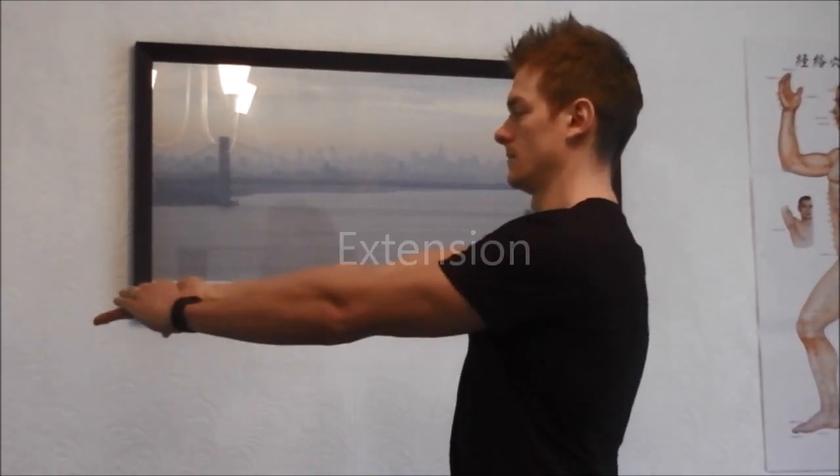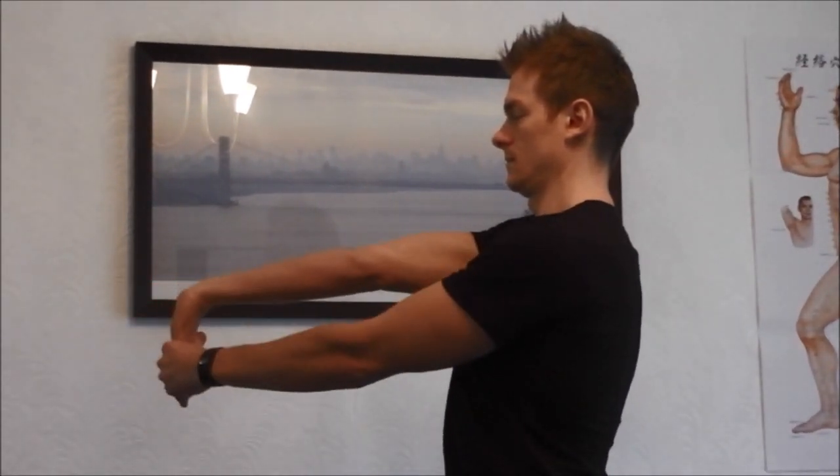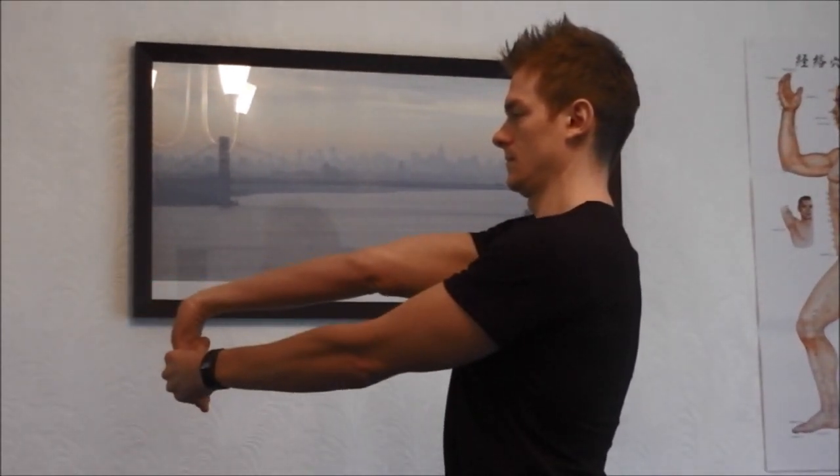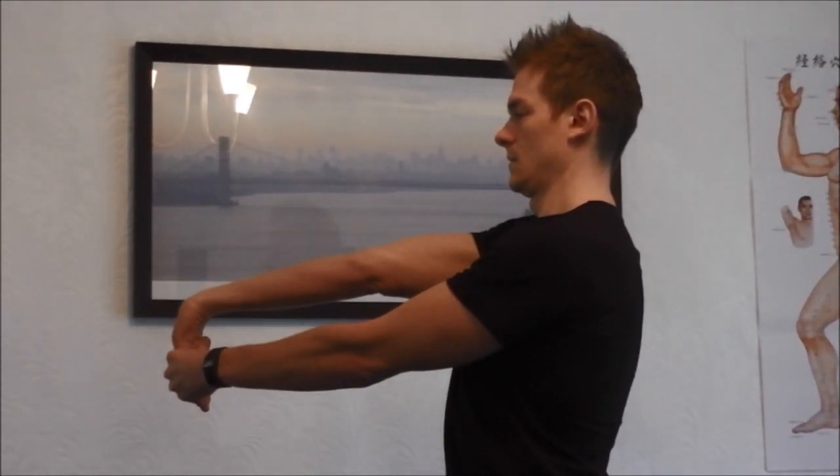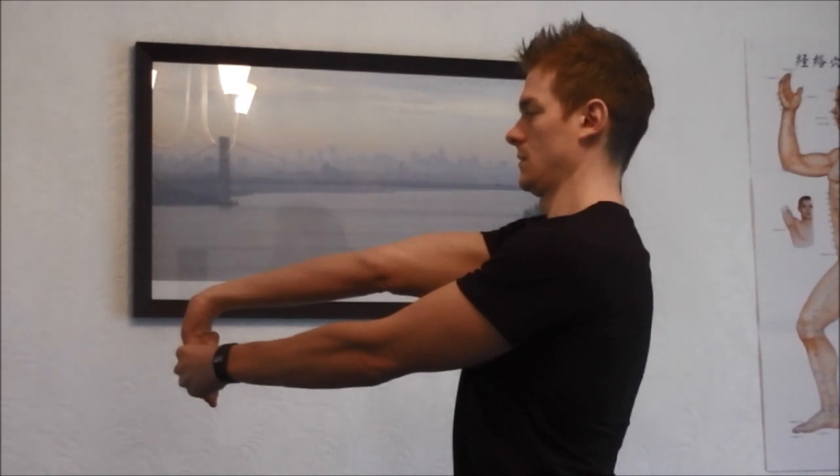After the first 72 hours you need to get the area moving. Extensions: with your elbow straight and your hand palm facing up, bend your wrist so that your fingers point towards the floor. Use your opposite hand to apply extra stretch. Hold for 30 seconds, and then swap sides if needed.